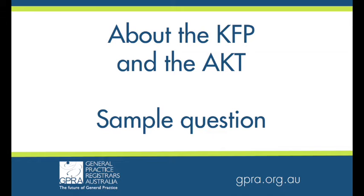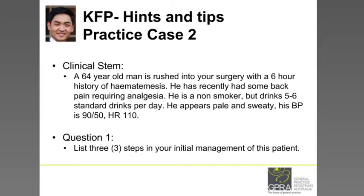The second case clinical stem: a 64-year-old man who's rushed into your surgery with a six-hour history of haematemesis. He's recently had some back pain requiring analgesia. In terms of his past history, he's a non-smoker, drinks five to six standard drinks a day. On examination, he appears pale and sweaty, his blood pressure is 90 over 50 and heart rate is 110.